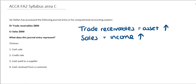Looking at the choices, we can eliminate a couple straight away. Neither account relates to cash and bank, so it can't possibly be a cash sale. It also relates to Trade Receivables — amounts owed by our customers — so it has no relevance to suppliers whatsoever, meaning it can't be cash paid to suppliers either. What we're left with is deciding whether this is a credit sale or cash received from a customer.